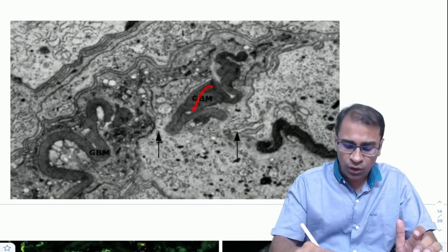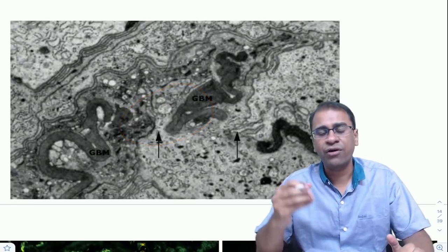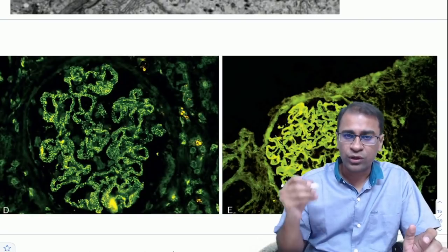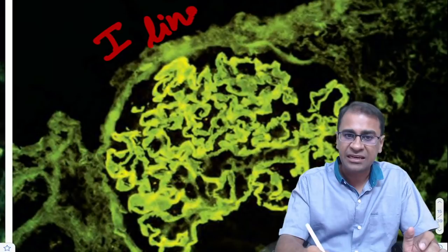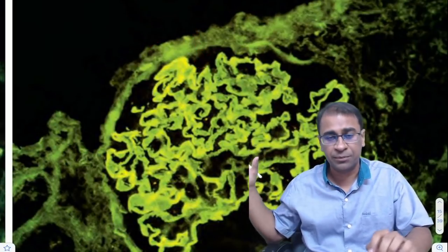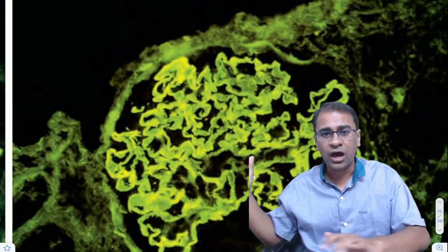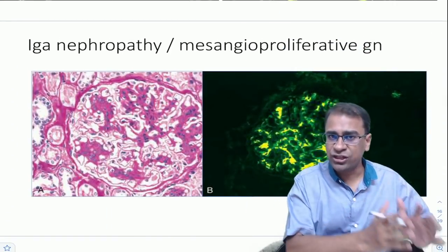In RPGN the GBM is broken down — broken GBM is a finding of RPGN. On immunofluorescence, RPGN type 1 shows linear deposits — very sharp, silky deposition along the GBM due to antibody deposition. Type 2 shows granular deposits because of immune complex deposition.